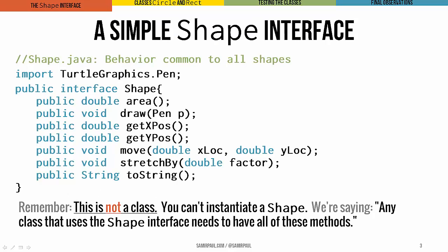Now without even caring about implementation details, we can just describe this behavior in an interface called shape that's shared by all circles and rectangles. A shape can give us its area, draw itself using a pen, get its x and y position, move somewhere, stretch, and return a string representation of itself.